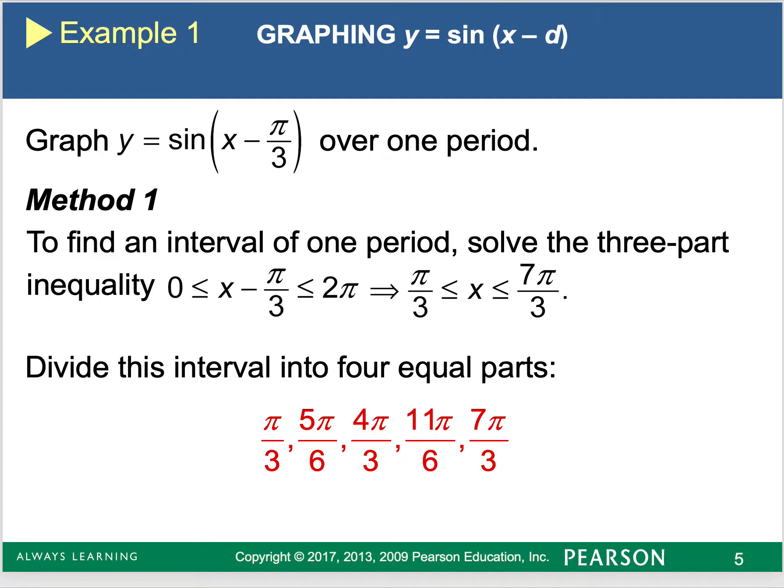So let's look at what a simple graph looks like. If I have sine of x minus π over three, over one period, the first thing we have to realize is we're moving it to the right π over three. However, we have not changed the period or the amplitude. So my period is still from zero to 2π. To shift everyone to the right, I would add π over three to zero and to 2π.